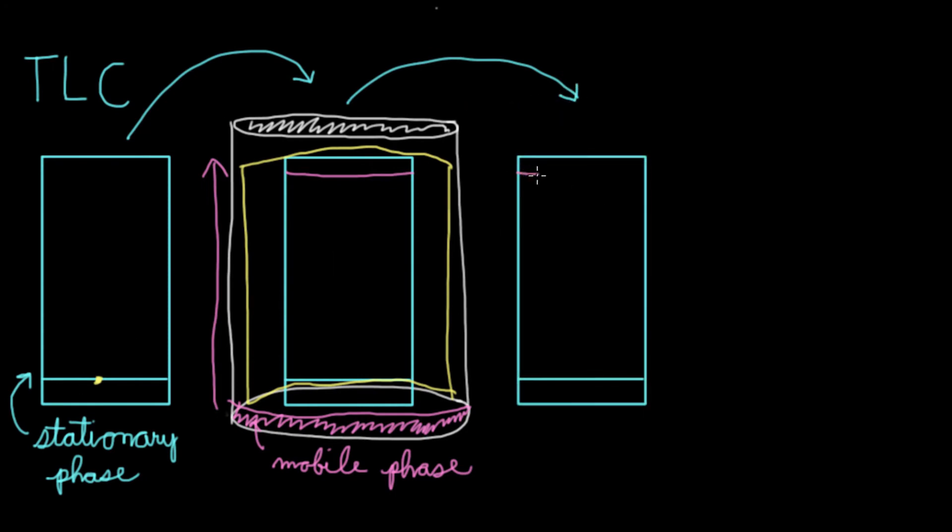Make sure to use a pencil to mark where your mobile phase got up to. How come we can't see anything yet? That's because usually you need something like a UV lamp shining on this so that you can visualize something.